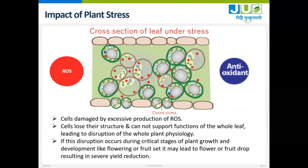You can see the cells damaged by excessive production of ROS. This can be seen in a dissection of a leaf which was under stress — a lot of red species are visible, meaning ROS production is more in this leaf. Cells lose their structure and cannot support functions of the whole leaf, leading to disruption of all plant physiology. If this disruption occurs during critical stages like flowering or fruiting, it may lead to flower or fruit drop, resulting in severe yield reduction.